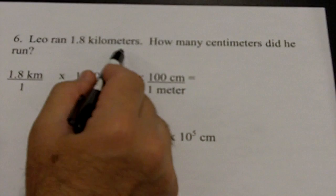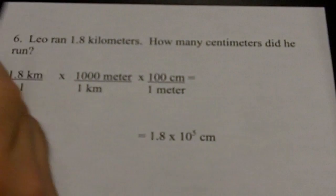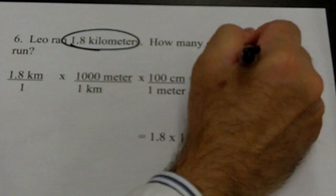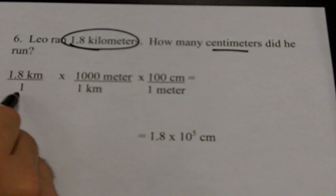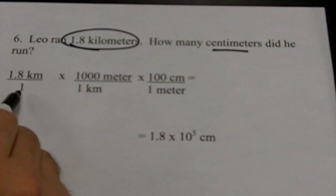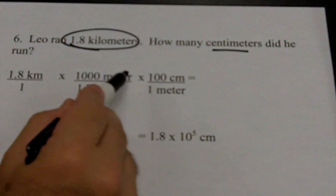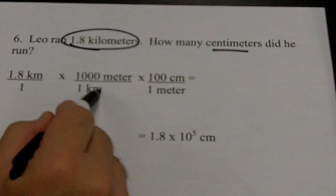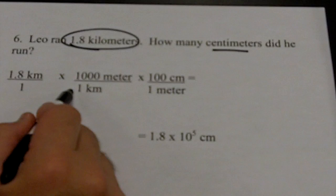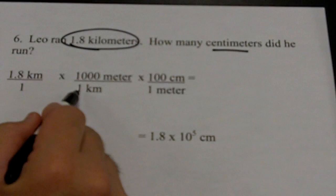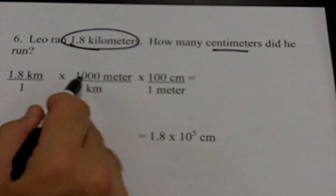Leo ran 1.8 kilometers. How many centimeters did he run? I start with what I know: circle 1.8 kilometers, underline centimeters. Write 1.8 kilometers over 1. Whatever unit is here goes there — kilometers in the denominator. I don't know how many centimeters are in a kilometer, so I have to go to the base unit: the meter. Kilo means a thousand, so there are 1000 meters in one kilometer. Place that in: 1000 meters equals one kilometer. Cancel kilometers with kilometers.